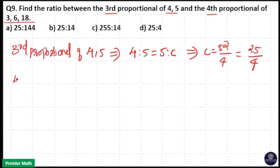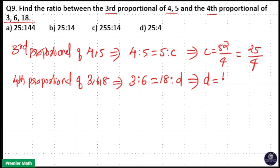Same way, 4th proportional of 3, 6 and 18. That means 3 is to 6 is equal to 18 is to D.